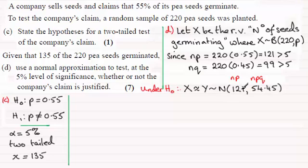Now, 135 is greater than the mean. So the mean, remember, was 121. So this value here is to the right of the mean. So we need to just be considering the upper tail. So what I'm looking at is the probability of our random variable X being greater than or equal to 135. I'm going to test out in two ways here. I'll show you both ways.